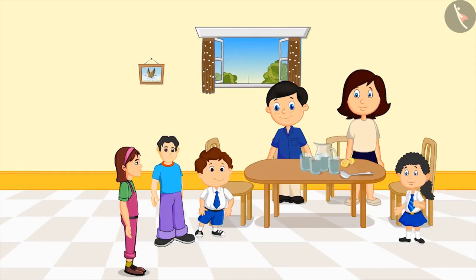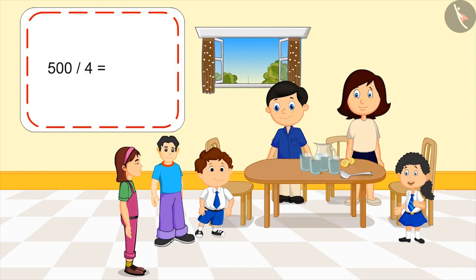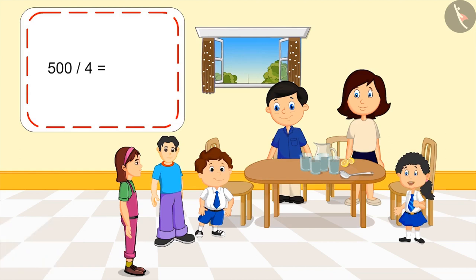Meanwhile, two friends of Pinky arrive. We should give lemonade to our friends too. Why don't we share a part of our lemonade with them? Look, in total we have two glasses of lemonade. Then, how much lemonade will we all get? As Mom explained, we have five hundred ml of lemonade. You mean half a liter? Yes, let's divide five hundred by four. Kids, you can pause the video and think about the answer. We all will have one hundred and twenty-five ml of lemonade.